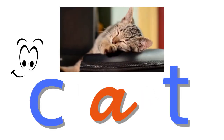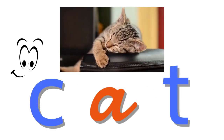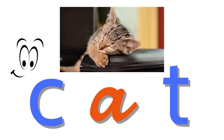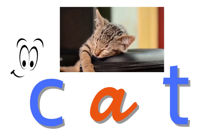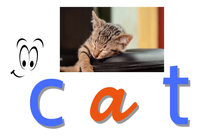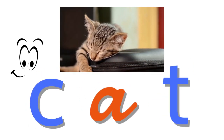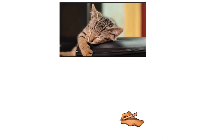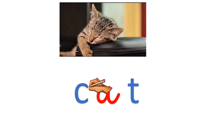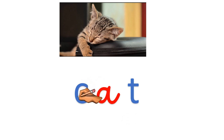When you read the word cat, it has three sounds: c-a-t. When we write the word cat, it has three letters: c-a-t.